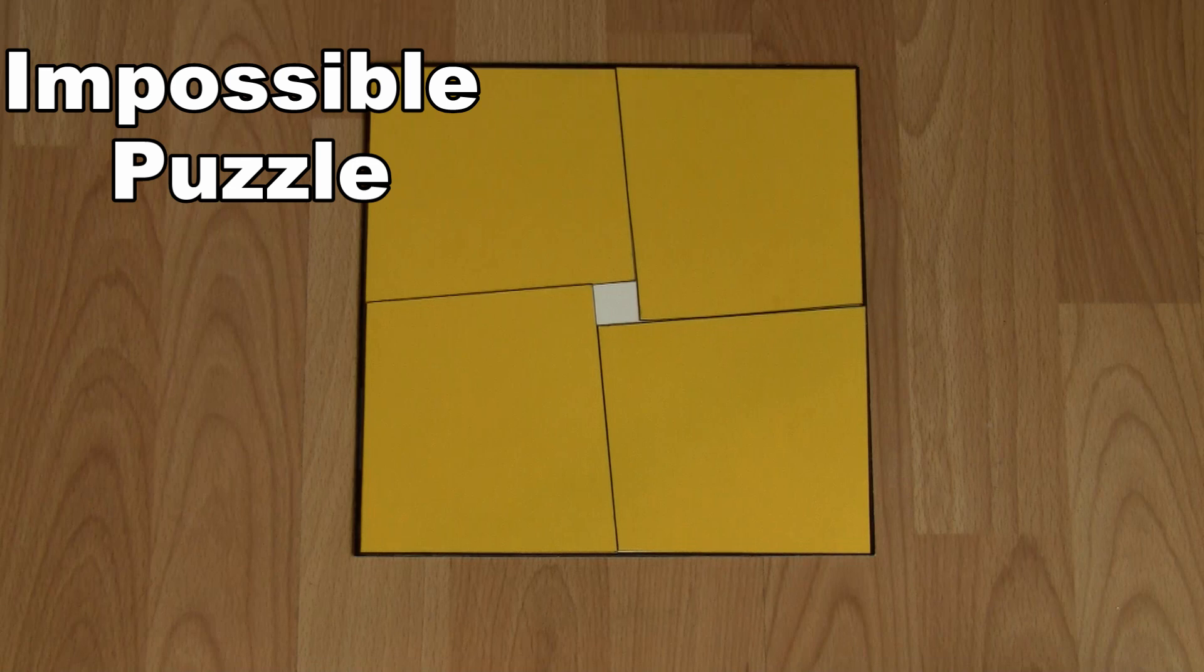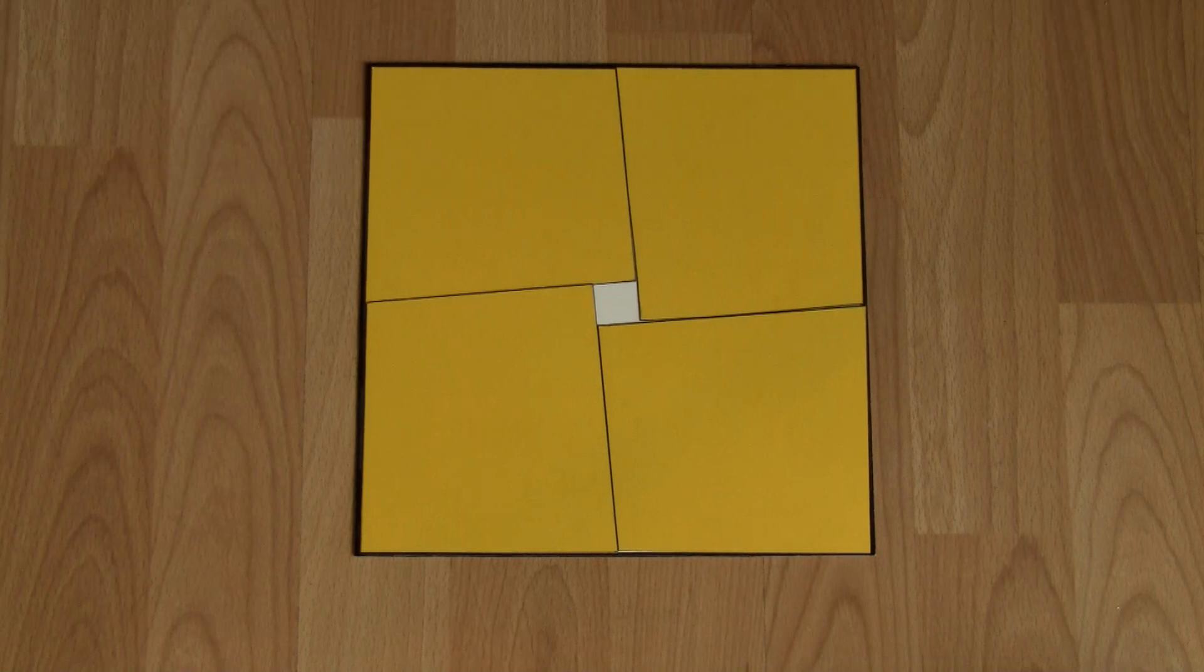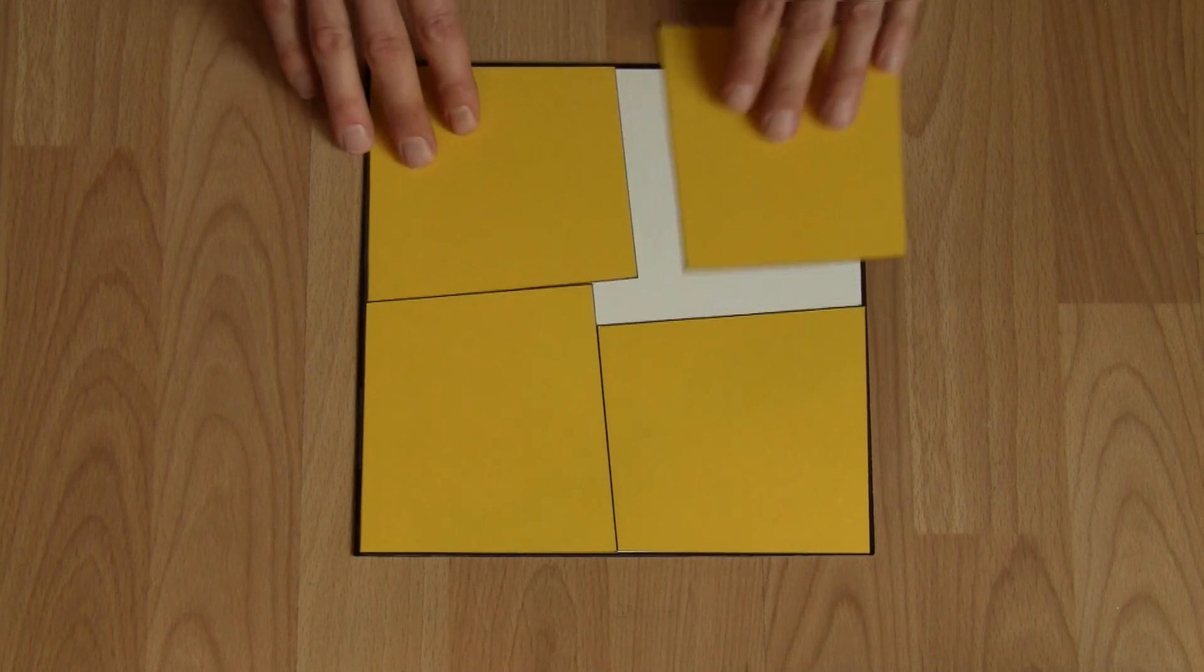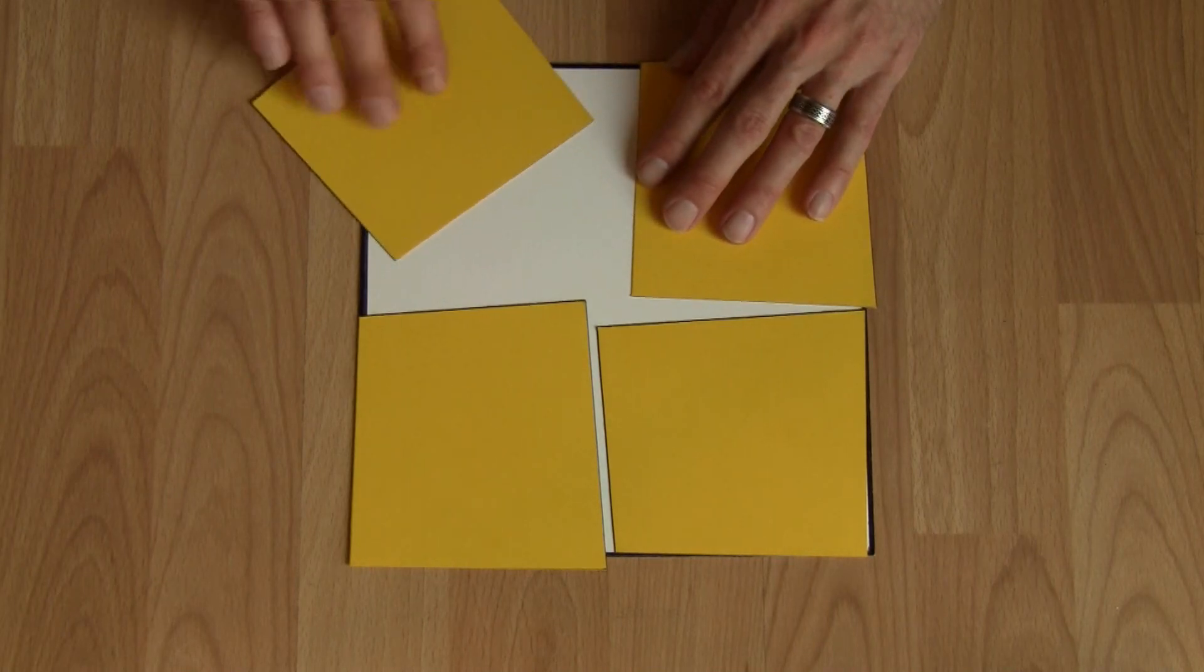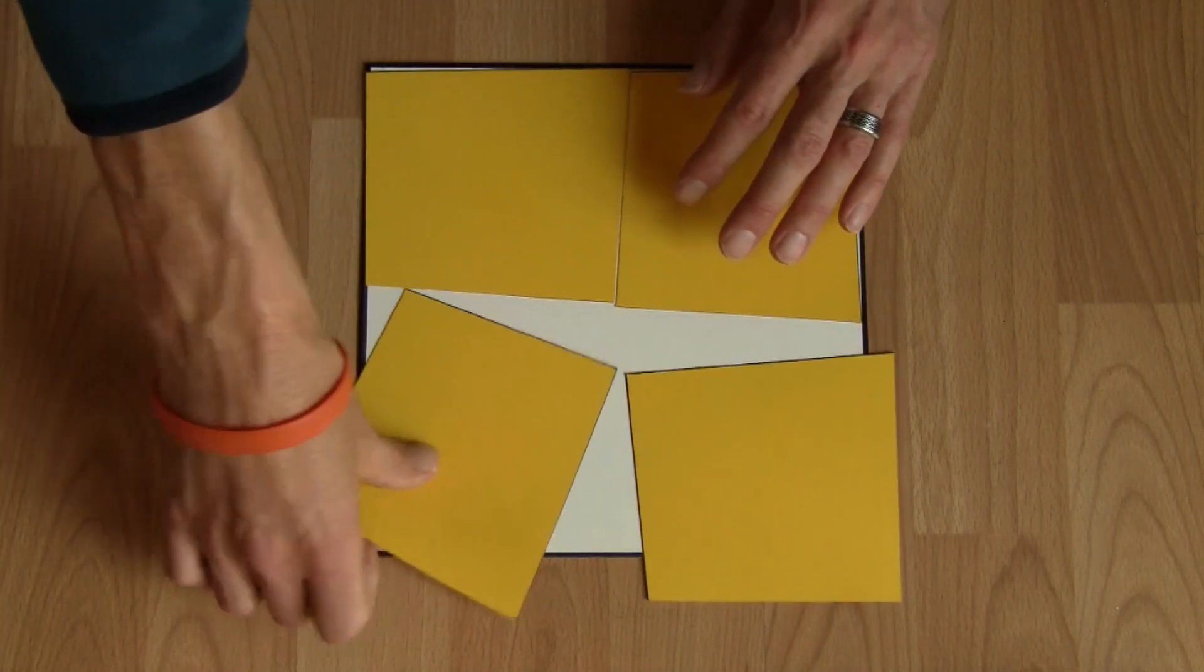Here we have quite a perplexing problem. There's a large white gap there in the center when the four yellow pieces are placed as shown here. However, when each piece is simply rotated 180 degrees, that gap completely disappears.